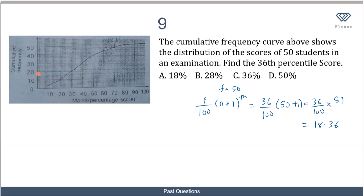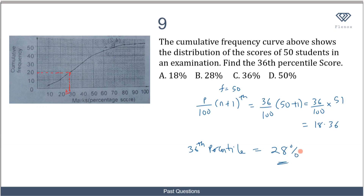We locate 18.36 on the cumulative frequency axis, trace horizontally to the curve, then trace down to the score axis. The value falls between 20 and 30, but closer to 30 than to 20, giving a score of approximately 28. So the 36th percentile score is 28, meaning a student who scored 28 performed better than 36% of those who took the test. The correct option is B.